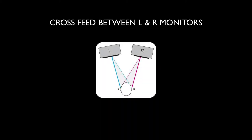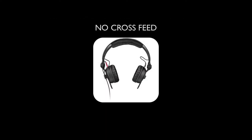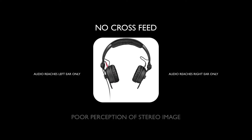With headphones, because of the way they shape around the ear, we don't get cross-feed. What that means is we can't use headphones for any sort of stereo imaging because we're only going to get an extreme right or an extreme left — we're not going to get anything in between.